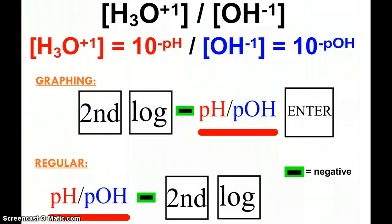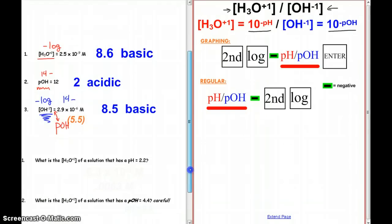You can see here, if you're trying to find the hydronium concentration, it's 10 to the negative pH. If you're trying to find hydroxide, it's 10 to the negative pOH. Take a moment and write down your calculator instructions on how we're going to do these problems.